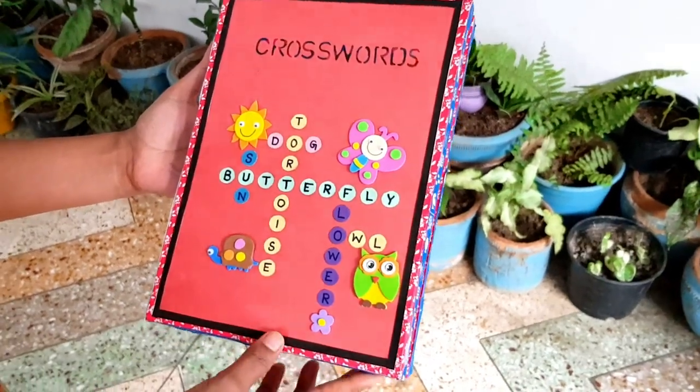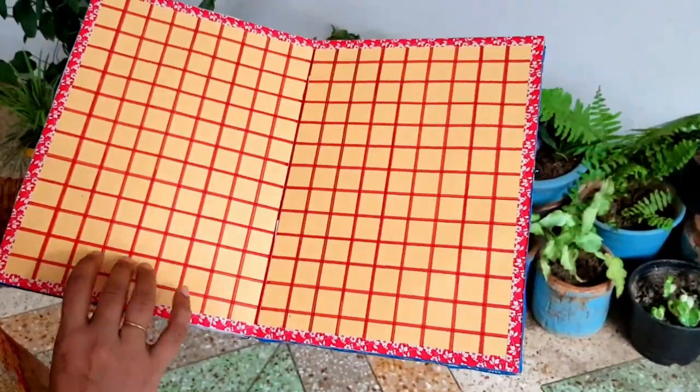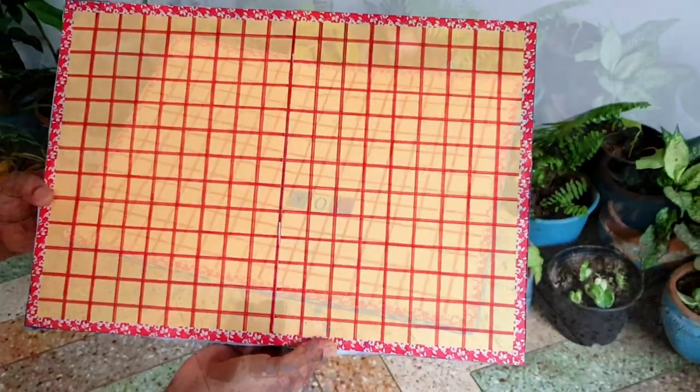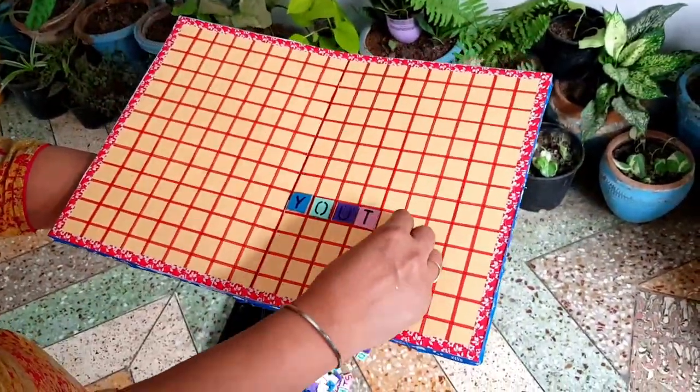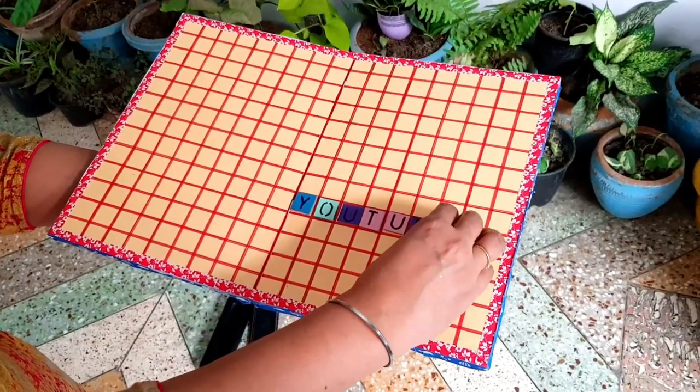A crossword is a word puzzle and word search game that usually takes the form of a square or rectangular grid of squares. The game's goal is to fill the squares with letters, forming words or phrases by solving clues.